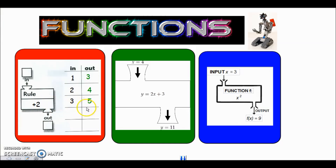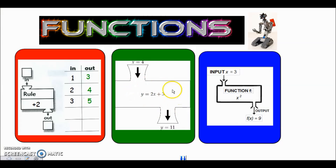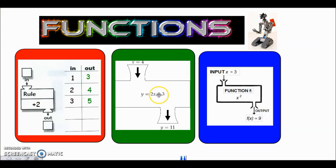At GCSE level, we use x and y. We've got a function y = 2x + 3 and we're putting in a value of four for x. The x value of four goes in and takes the place of x in the function, so it's two times four which is eight, plus three, and then the output is eleven.